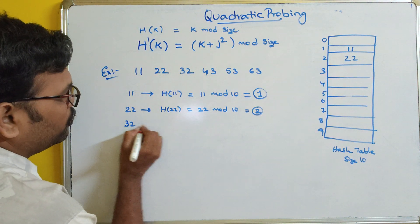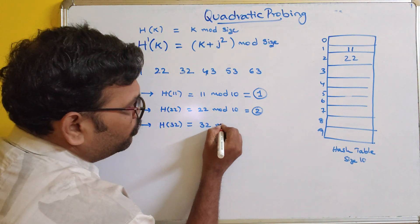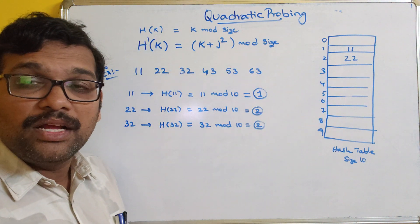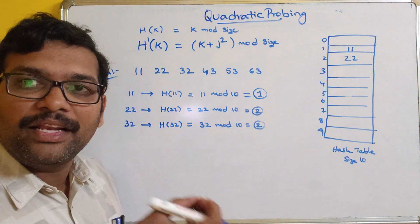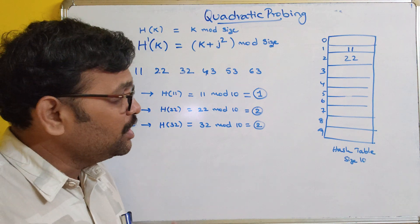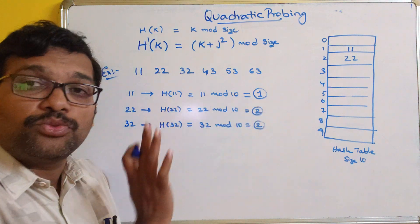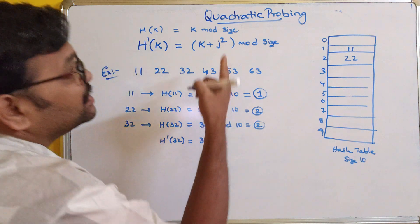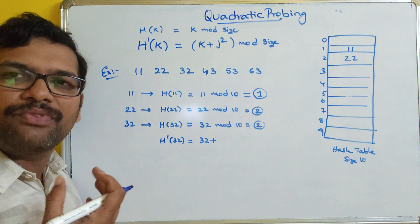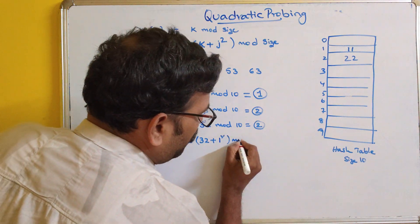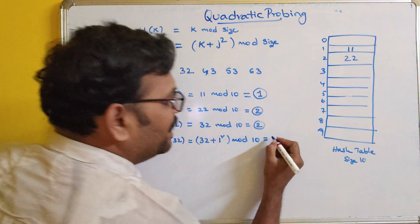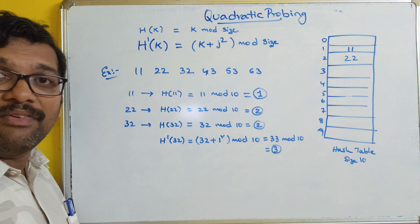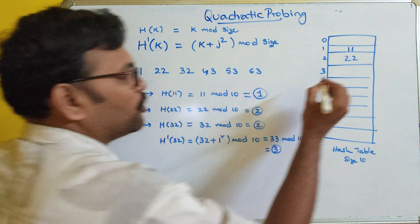For 32: h(32) = 32 mod 10 = 2. Index 2 is not available since 22 is already stored there — there is a collision. So we calculate h'(32) = (32 + 1²) mod 10 = 33 mod 10 = 3. Index 3 is available, so we store 32 at location 3.